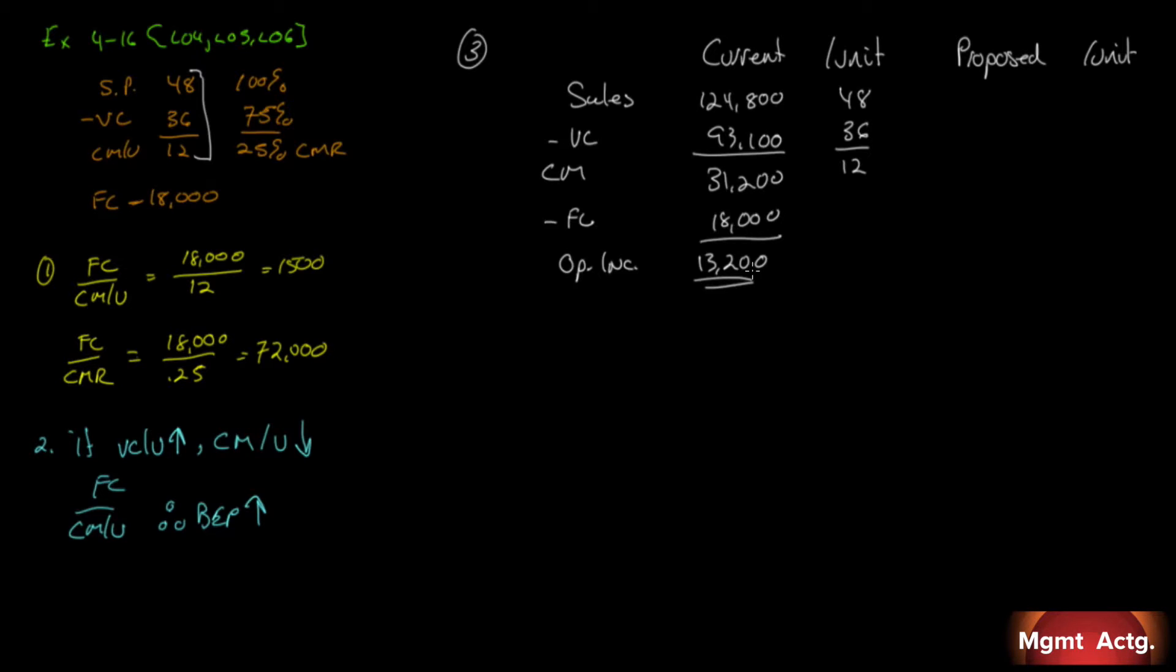Now, let's look at our proposed changes. We're told that we're currently selling 2,600 tackle boxes. We're going to reduce the price 12.5%. Well, let's figure out what that is first. If we're going to reduce the price 12.5%, what does that make of $48? If you multiply 48 by 0.125, you'll get $6 which means our new selling price is going to be $42 per unit.